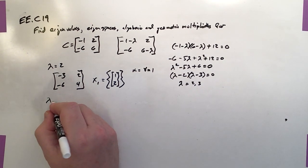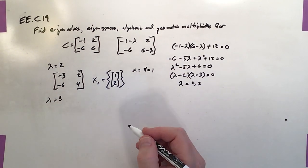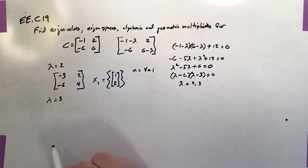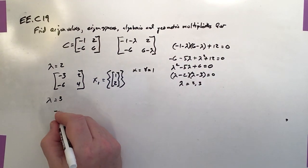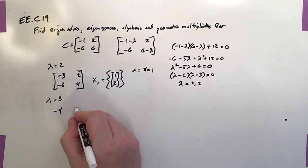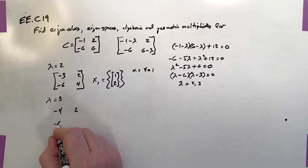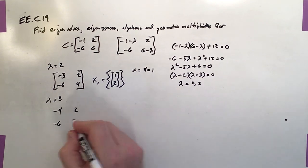Okay, now let's check the second one. So when lambda equals 3, again, we're just going to rewrite the original matrix with our new lambda. That's negative 1 minus 3, that's negative 4, 2, negative 6, and 6 minus 3 is 3.